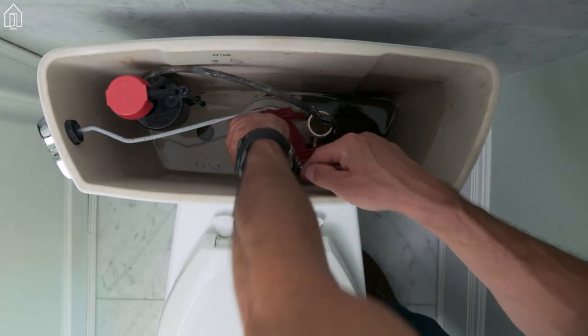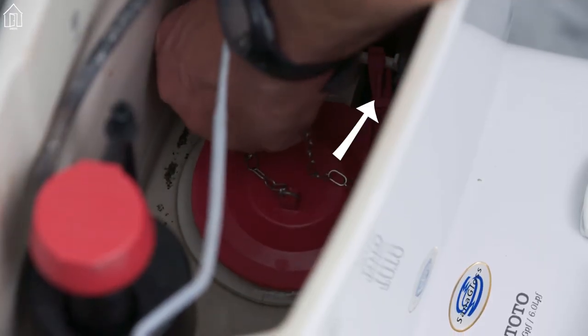Then you just fit the new flapper in place. Snap these little ears back onto the overflow tube.